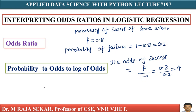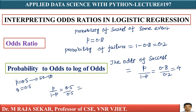Let me take another example. If the probability of success P equals 0.5, then Q equals 1 minus P, which is also 0.5 — that means 50-50% chance. The odds of success is P by 1 minus P, that is 0.5 by 0.5, which equals 1 by 1. So odds of success is 1 to 1.